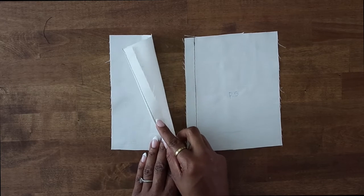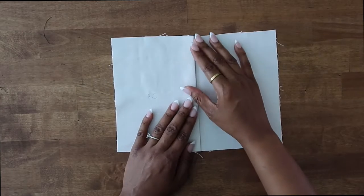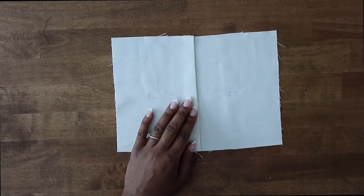Once you have the folded seam allowance placed over your other seam allowance like so, you can grab some pins to place in this to hold it in place.